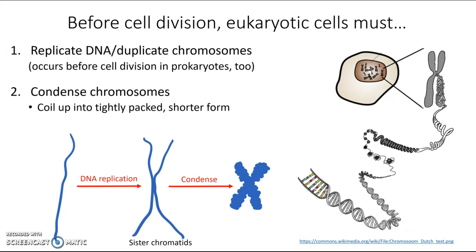Another way to think about it is if you had many really long pieces of yarn — maybe 46 really long pieces if we're comparing it to the human genome — and you needed to separate all of them evenly after copying them. It's going to be really difficult with all these hundreds-of-feet-long pieces, but it's going to be easier if you roll them up into two little short balls of yarn. This condensing process makes it easier to separate the chromosomes.